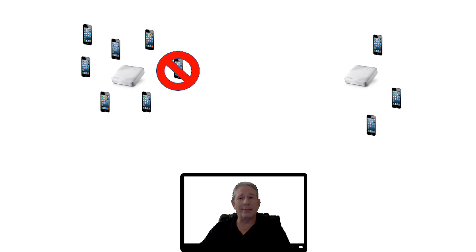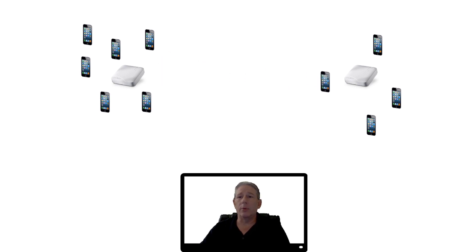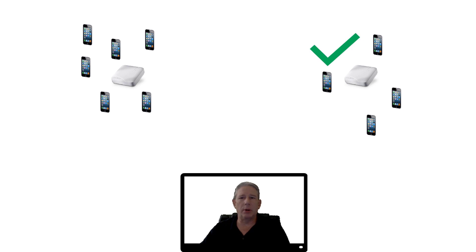It'll realize that, continue scanning on other channels, and find the other AP. The other AP does not ignore those connection attempts, and that station is allowed to connect. What this does is provide a better experience for the user, the client device, and applications by allowing devices to connect with APs that are going to have more capacity and more airtime available to give the clients.